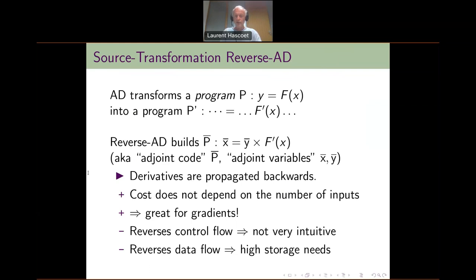The strong point of reverse AD is that the cost of computing x-bar does not depend on the number of inputs, that is the size of x, and that's simply great for gradients. For gradients, y itself is a scalar — there is one output of interest called the cost function — and you compute the gradient of the function that computes this cost with respect to its inputs x. This computes x-bar, the gradient of the cost function, in a single run of program p-bar.